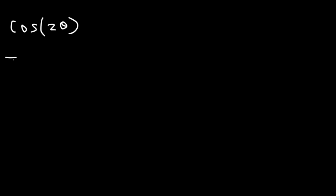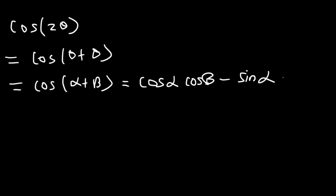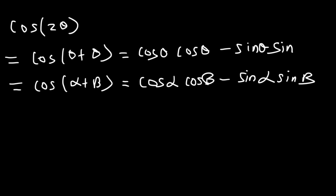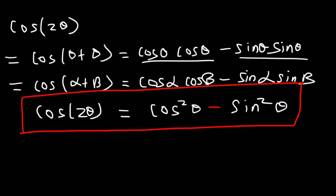Now what about the double angle formula for cosine 2θ? Cosine 2θ is cosine(θ + θ), and we're going to use the sum formula for cosine: cosine(α + β) = cosine α cosine β − sine α sine β. So this is cosine θ times cosine θ minus sine θ times sine θ. Cosine times cosine is cosine squared, and sine times sine is sine squared. So cosine 2θ = cosine² θ − sine² θ.